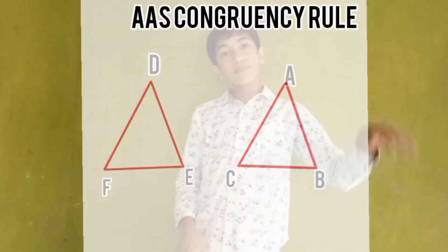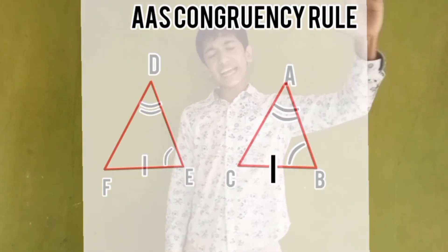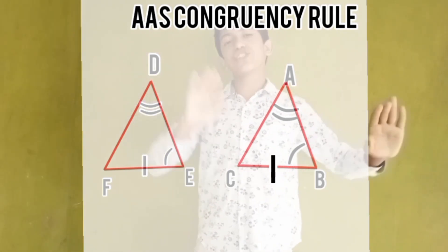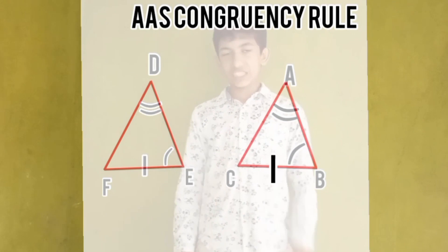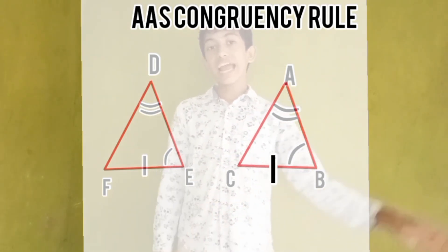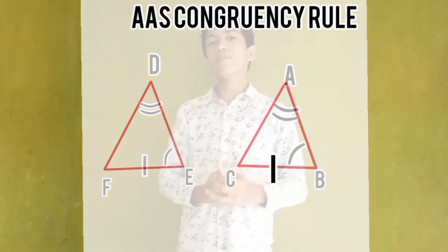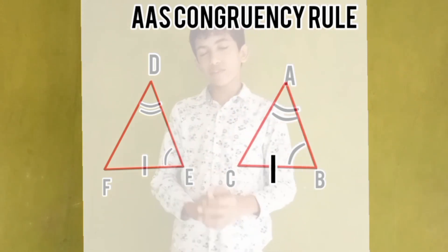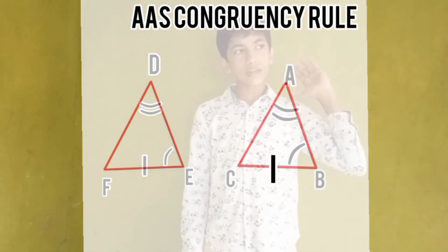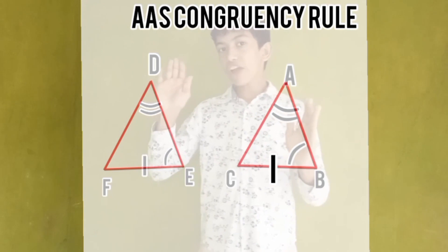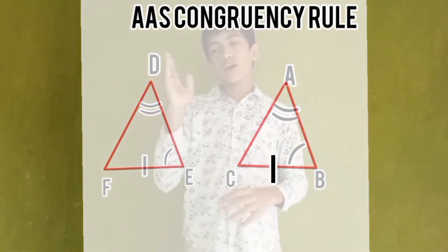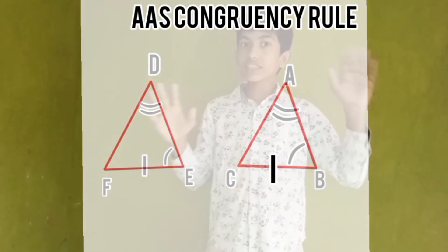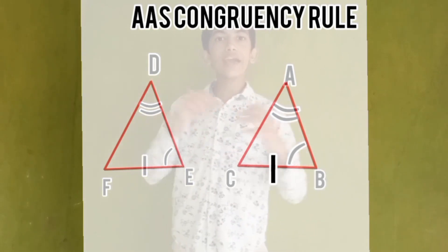Let's take angle A and angle B: angle A equals angle D, and angle B equals angle E. Now for the side, we can take either side — from angle-angle-side, BC equals EF. Then these two triangles are said to be congruent by AAS congruency rule. All this content will come in your textbook — it's all pretty simple.